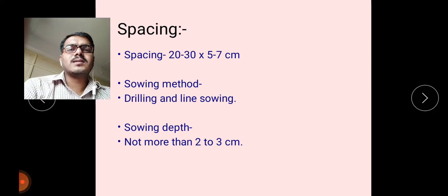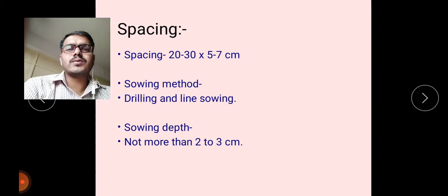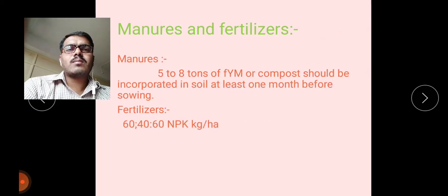Sowing method: generally drilling and line sowing are used for jute crop sowing. Sowing depth should be no more than 2 to 3 centimeters. This shallow depth sowing is essential for better germination and development — seeds are placed at only 2 to 3 centimeters depth.